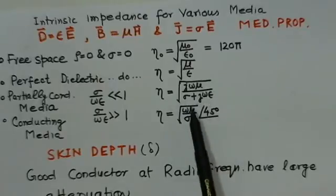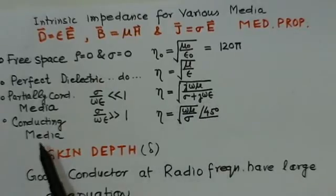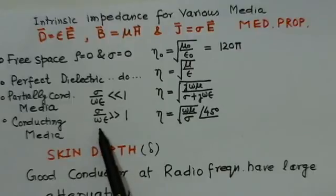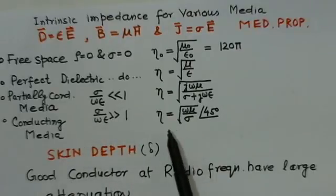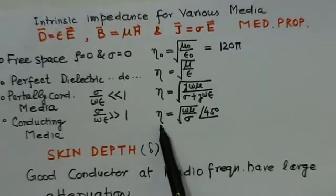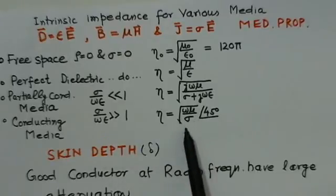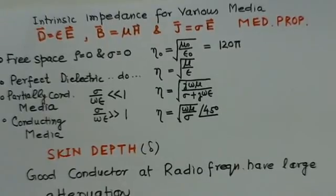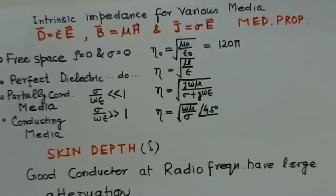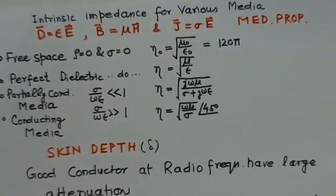For conducting media, σ/(ωε) >> 1, and taking the approximation you get η = √(ωμ/σ)∠45°. This is an illustrative example showing how the impedance is different in different media.